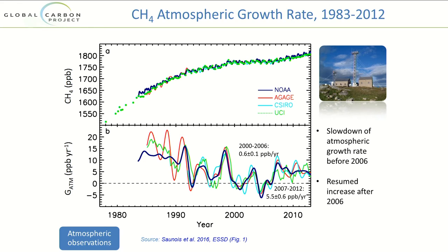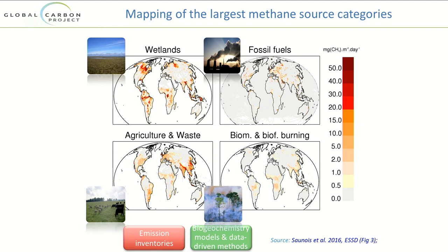To see where methane emissions are happening: wetlands in northern Canada and northern US, the Brazilian areas, the Pantanal, wetlands of the Congo, the Mekong in Southeast Asia — very many of the wetlands are in the tropics, and these are very efficient ways of getting methane to the atmosphere. Fossil fuels: the usual suspects in developed countries, but increasingly China. Agriculture and waste: major centers in the US, eastern South America, Europe, India, and China. Biomass burning: the southern Amazon, Africa, and Southeast Asia.